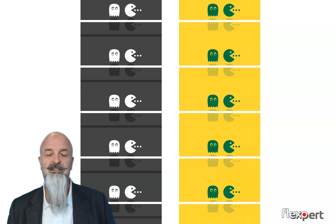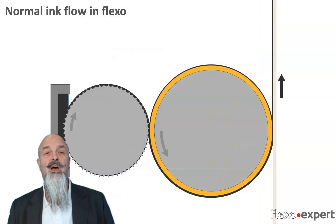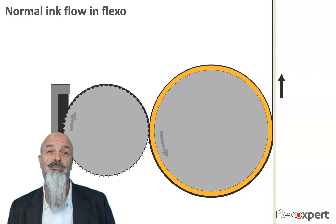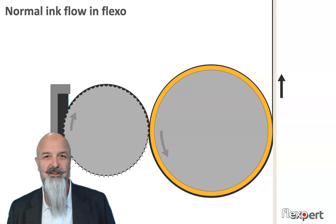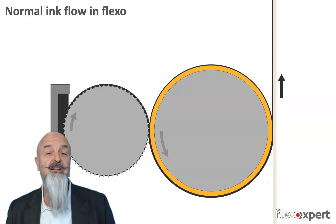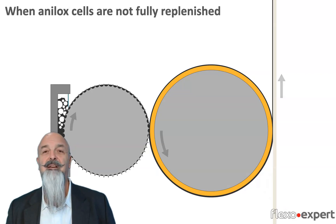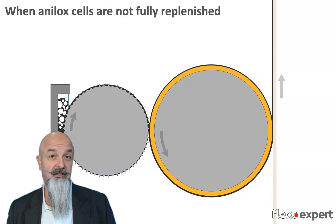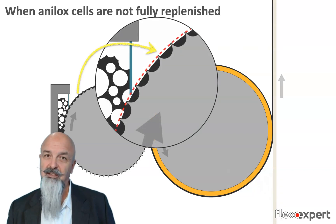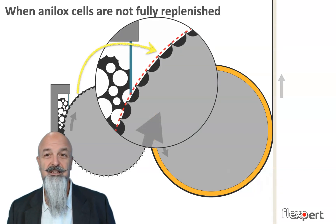Let's start from the first case: ghosting on a single color. During printing, we have ink going from the ink chamber to the anilox, and then from the anilox to the plate, and then from the plate to the substrate. After the anilox touches the plate, the cells release some ink to the plate surface and therefore need to be refilled in the ink chamber with fresh ink. It may happen, especially when we have an upper metering blade in the chamber, that for different reasons the full replenishment of the cells is not successful.